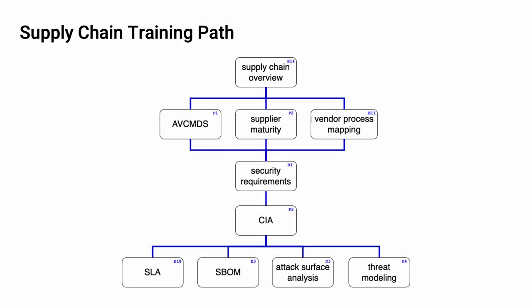This diagram shows the overall AVCDL supply chain training path. If you're taking this training, it's assumed that you've already completed the supply chain overview training. This training covers the vendor cybersecurity process to AVCDL mapping. Additional trainings will cover manufacturer disclosure statement, AVCMDS, supplier self-reported cybersecurity maturity, cybersecurity requirements, tailoring the cybersecurity interface agreement, service level agreements (SLAs), software bill of materials (SBOMs), attack surface analysis, and threat modeling.